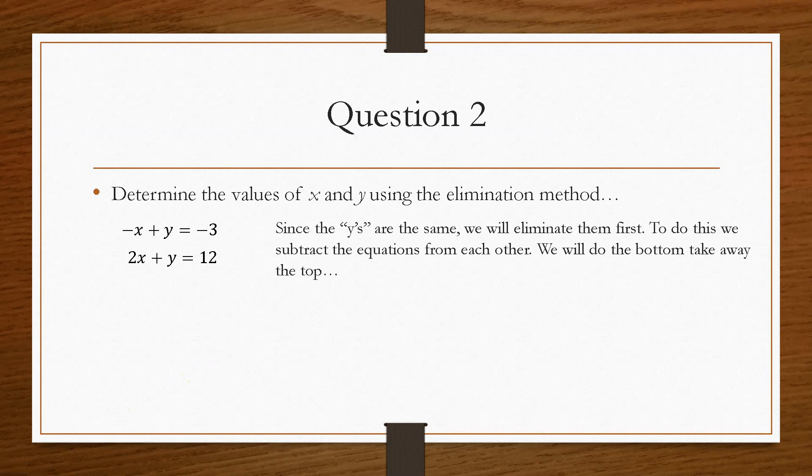So as it says here, we're going to cancel out the y's. And the way that we can do this is take them away from each other. So here we'll do the bottom equation, take away the top. So we take them away. That will cancel out the y's. And then we'll do 2x minus minus x, which gives us 3x. And 12 minus minus 3 gives us 15. So x is 5. That's the same as what we got in the previous question.